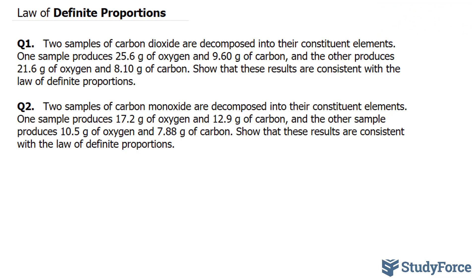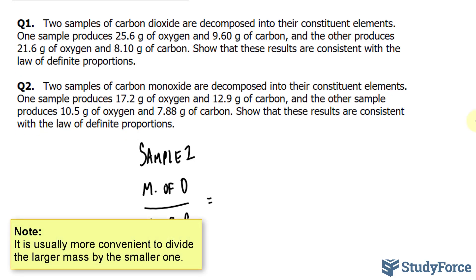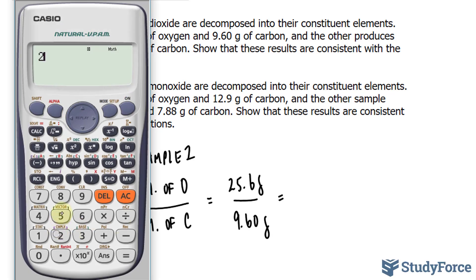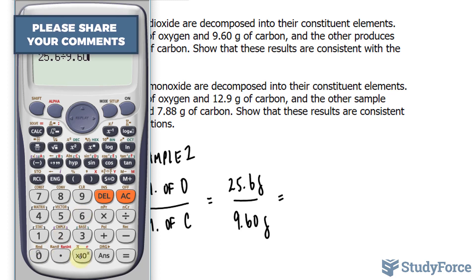What I'll do is compare the mass of oxygen to the mass of carbon in sample one. Mass of oxygen to the mass of carbon. We're told that the mass of oxygen is 25.6 grams, and the mass of carbon is 9.60. Let's divide 25.6 by 9.60. That gives us 8 over 3.